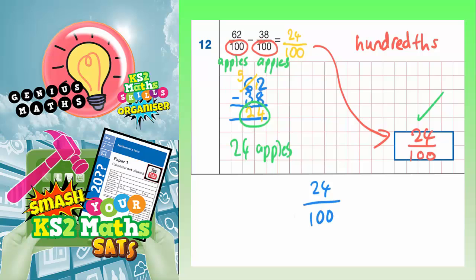So to simplify it, we need to divide both 24 and 100 by a number that goes into both of them. Well, they're both even numbers, so we could divide them both by 2. 24 divided by 2 is 12, and 100 divided by 2 is 50. So that's a simplified version. But then these are both even again, so we could divide them both by 2 again, to simplify it even further. 12 divided by 2 is 6, and 50 divided by 2 is 25.